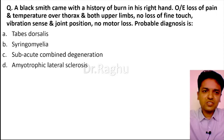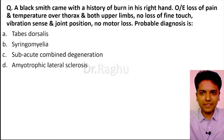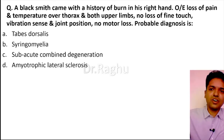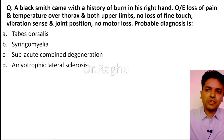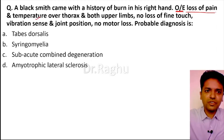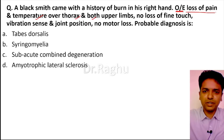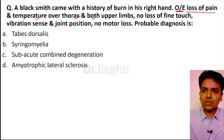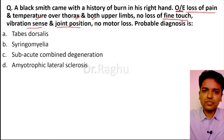The case goes like this: a blacksmith came with a history of burn in his right hand. On examination — concentrate on this part, it's very important — there is loss of pain and temperature over the thorax as well as both upper limbs bilaterally. But there is no loss of fine touch, no loss of vibration sense, no loss of joint position, and no motor loss.